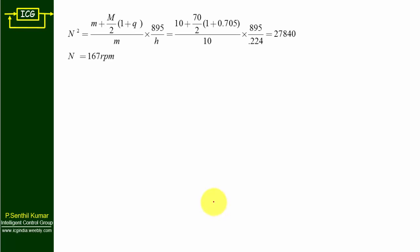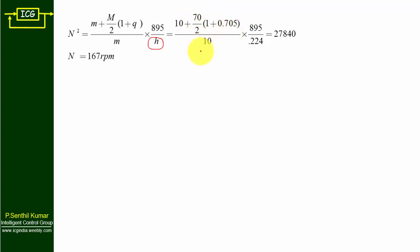For subdivision 1, the formula is N² = [(m + M/2)(1 + q) / m] × (895 / h). Substituting small m = 10, capital M = 70, q = 0.705, and h = 0.224: N² = [10 + (70/2) × (1 + 0.705) / 10] × (895 / 0.224), giving N² = 27840. Taking the square root, N = 167 rpm. This is the equilibrium speed of the governor.